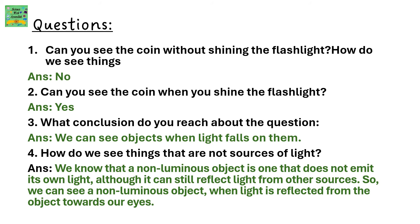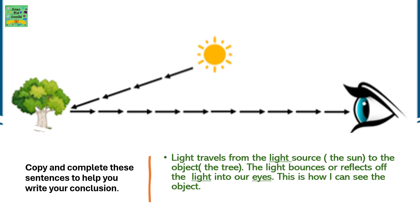How do we see things that are not sources of light? A non-luminous object is one that does not emit its own light, although it can still reflect light from other sources. We can see a non-luminous object when light is reflected from the object towards our eyes. Light travels from the light source — the sun — to the object, such as a tree. The light bounces or reflects off the object into our eyes. This is how we can see the object.